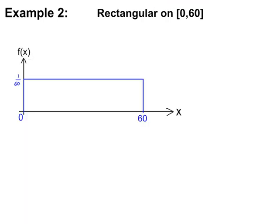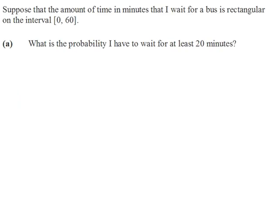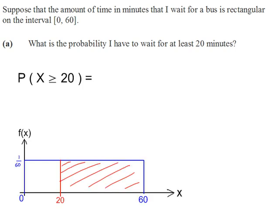Example 2. The rectangular distribution on the interval 0 to 60, which will give us the following sketch. The context and the probability of waiting for at least 20 minutes, there is no mention of the words given that, this is not a conditional probability, so the probability is the width times the height.